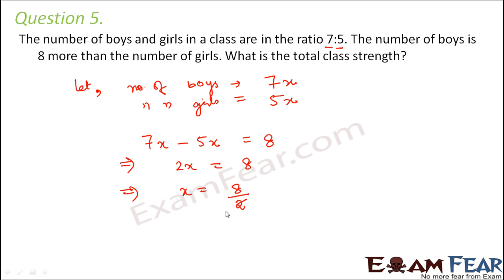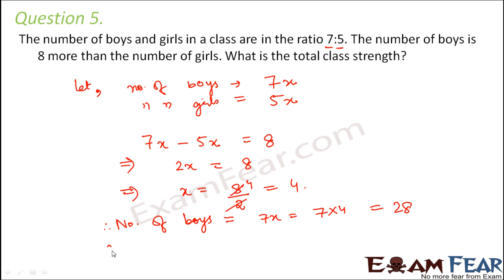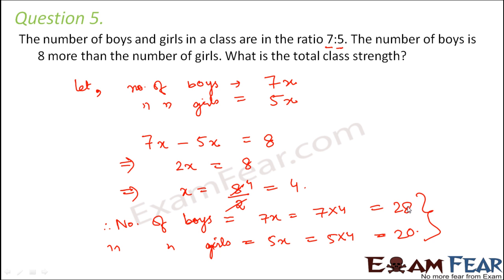So x is equal to 8 divided by 2, which is equal to 4. Therefore the number of boys would be 7x, that is 7 into 4 which equals 28, and the number of girls would be 5x, that is 5 into 4 which equals 20. So there would be 20 girls and 28 boys in the class.